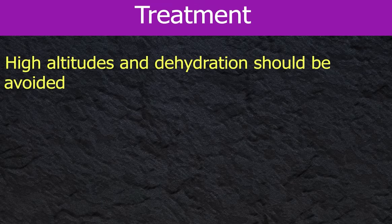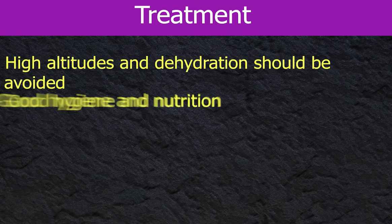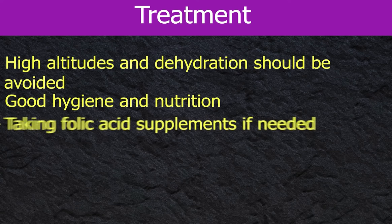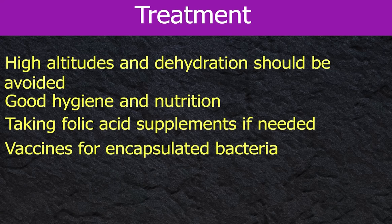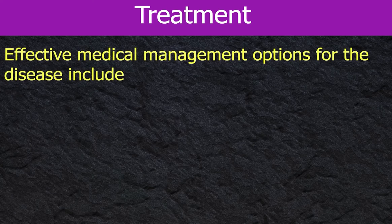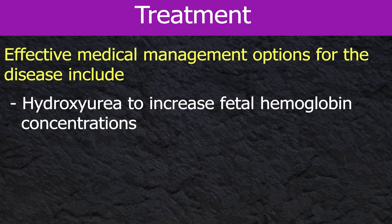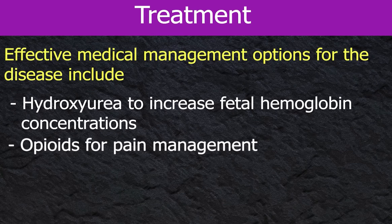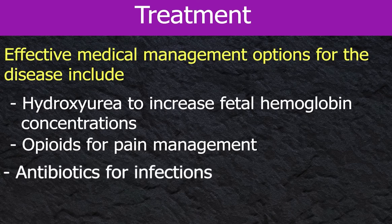For treatment, known trigger factors for crisis — like high altitudes and dehydration — should be avoided, while maintaining good hygiene and nutrition and taking folic acid supplements if needed. Vaccines for encapsulated bacteria are beneficial as the spleen may get affected. Medical management options include hydroxyurea to increase fetal hemoglobin concentrations, opioids for pain management, and antibiotics for infections.